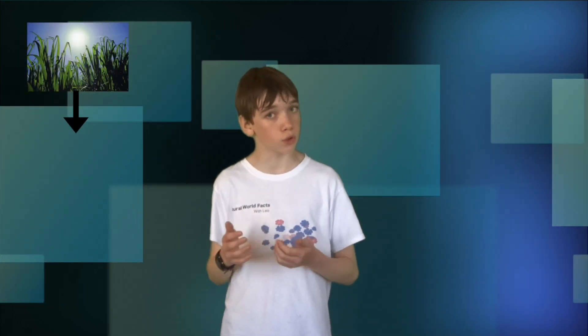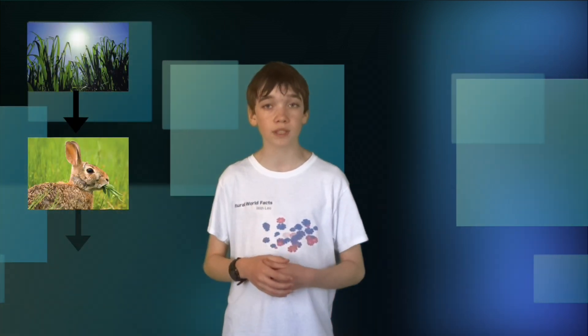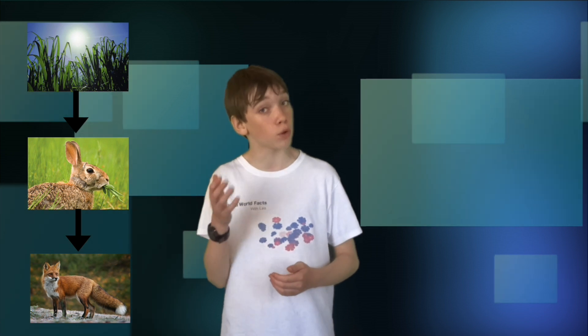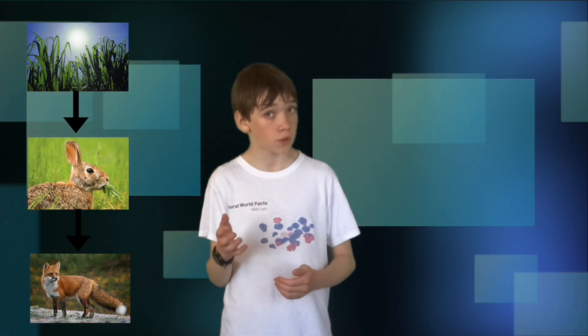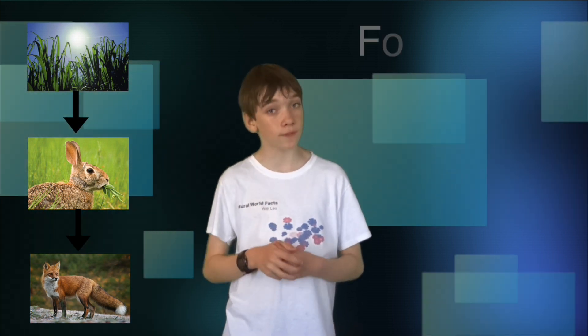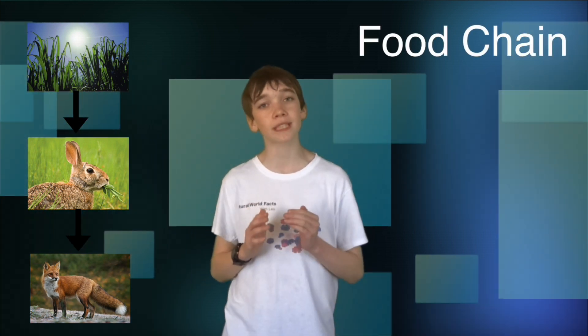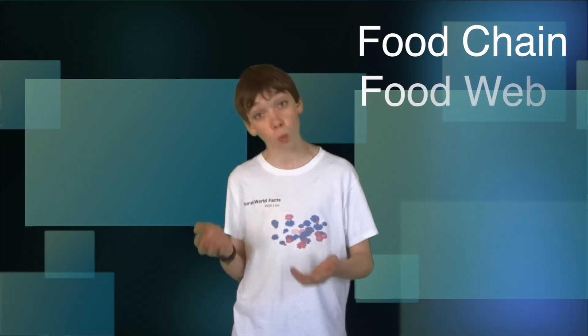Herbivores will rely on the plants, also called producers, as a food source and the carnivorous animals will eat those herbivores. This is called a food chain, and when all the food chains in an ecosystem are joined up, it's known as a food web.